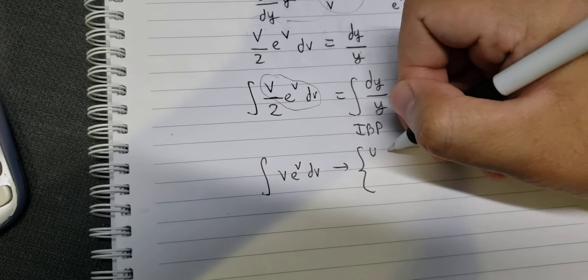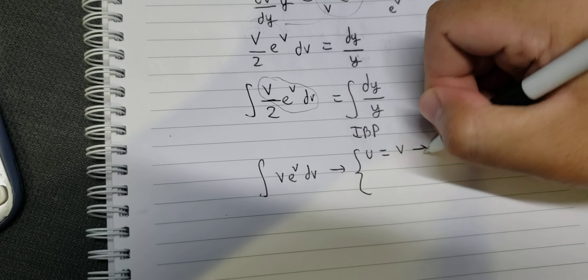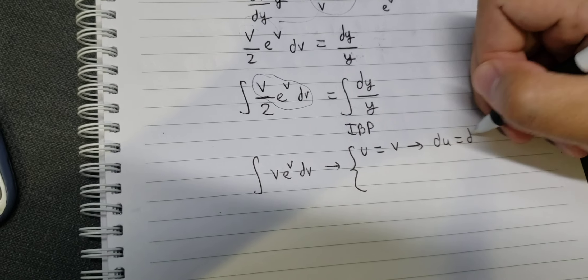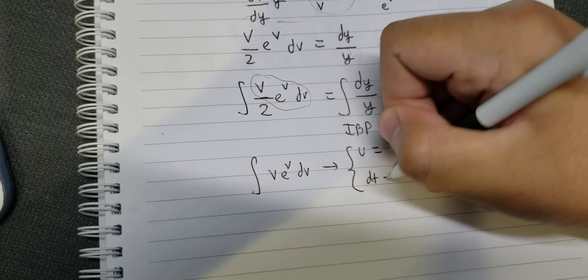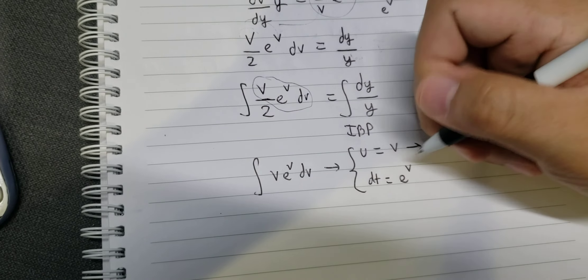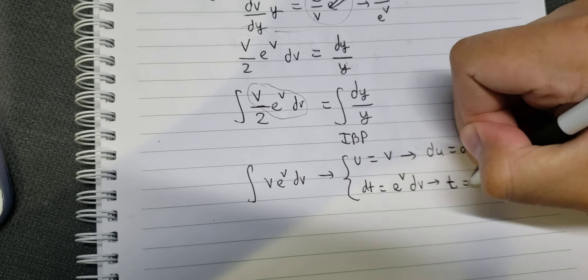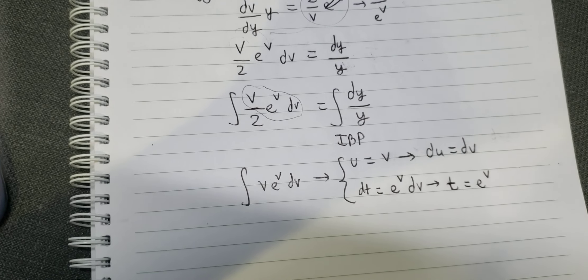We use integration by parts. I'll set u equals v and dv equals e to the power of v dv. Then take the derivative du equals e to the power of v dv. The integral becomes e to the power of v.